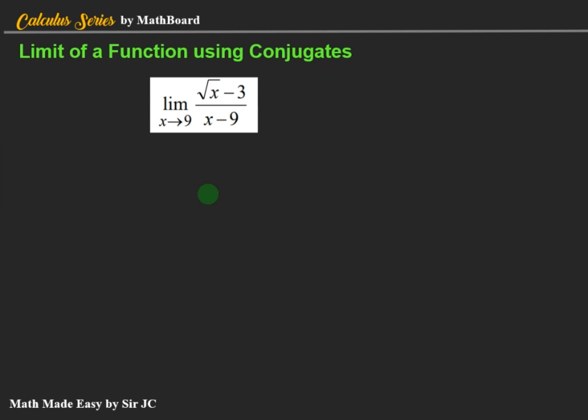Let's have this one: the limit of (√x − 3) / (x − 9) as x approaches 9. If you replace x by 9, the result in the numerator is √9 − 3 = 3 − 3 = 0. And in the denominator, that's 9 − 9 = 0 as well. So the result is indeterminate.